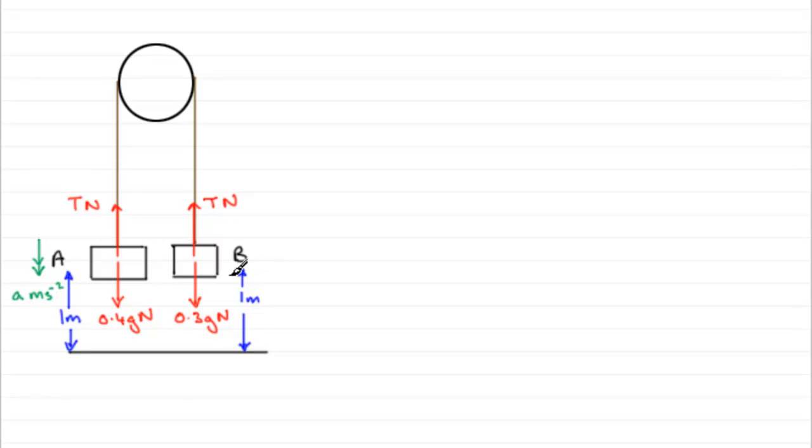And B will accelerate upwards with the same acceleration as we've got down here. We're often asking questions, why that's so? And it's because the string is inextensible. It doesn't stretch. So, as soon as A starts to move down, B will start to move up.